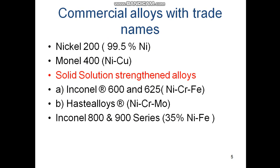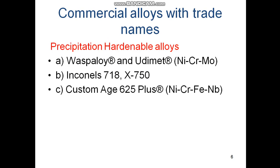Commercial alloys with their trade names: Nickel 200 is commercially pure nickel at 99.5 percent; Monel 400 is a nickel-copper alloy. Solid-solution-strengthened alloys include Inconel 600, 625, Hastelloy, Incoloy 800 and 900 series — these are commercially available under their respective trade names. Precipitation-hardenable alloys include Waspaloy, Udimet, Inconel 718, X-750, and Custom 465 Plus.